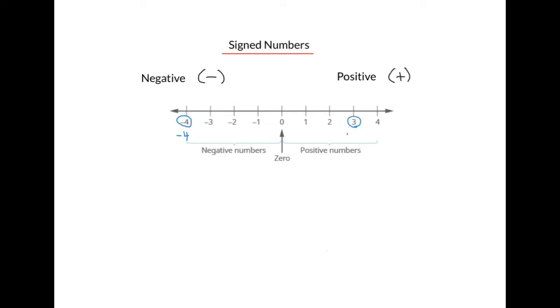3 occupies a spot and has a sign and a value. You'll notice that if a sign is missing from a number, it's assumed to be positive.